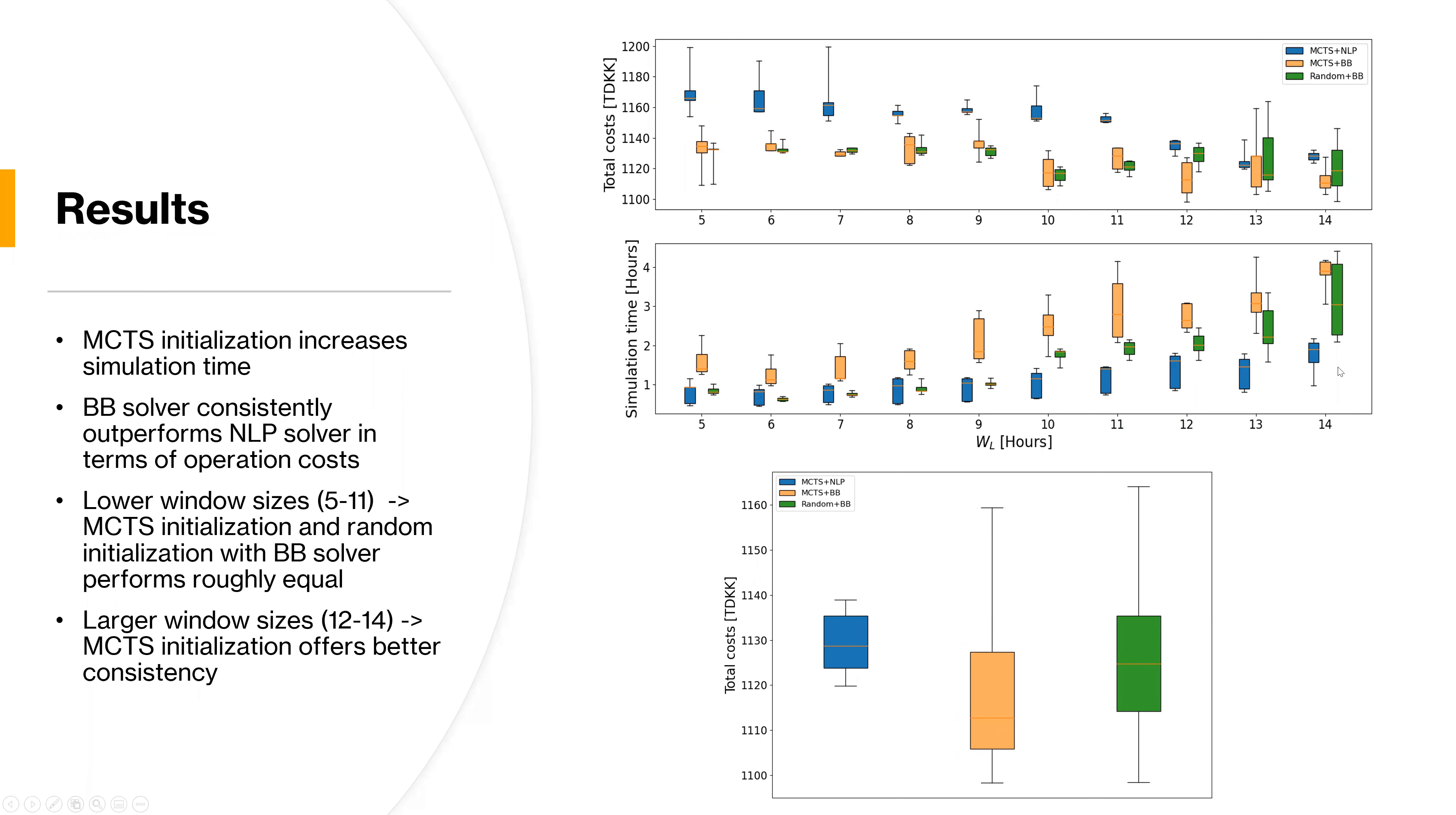Interestingly, we can see that the branch and bound solver outperforms the non-linear problem solver. This is also expected. And that the two branch and bound, or the initialization method doesn't really matter for lower horizon lengths. However, when we get to very high, large problem sizes, it starts to make a bit difference. As you can also see down depicted on this box plot, where we can see that the Monte Carlo initialization provides much better consistency than the random initialization.